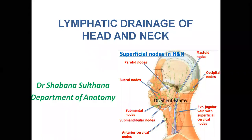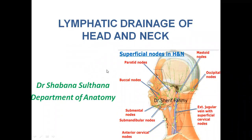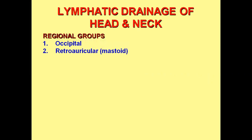Good morning dear students, we are going to discuss lymphatic drainage of head and neck. The lymphatic drainage of head and neck has regional groups of lymph nodes. We have the occipital group of lymph nodes, retro-auricular also called mastoid — retro meaning behind the ear, towards the mastoid process.